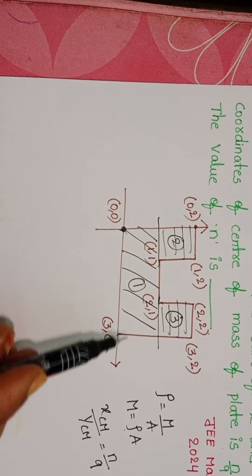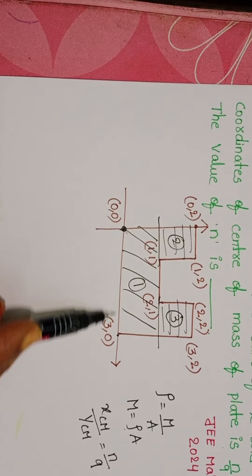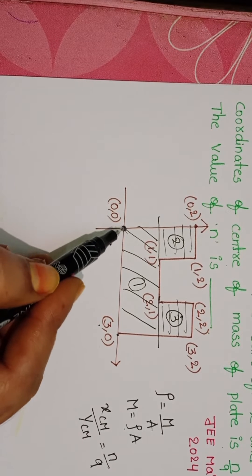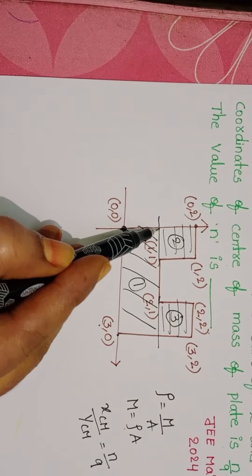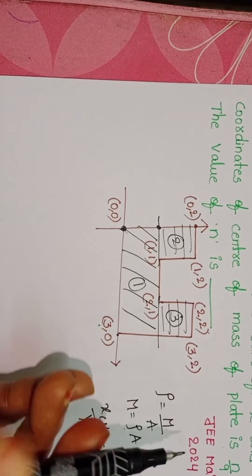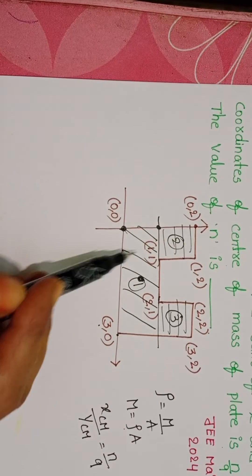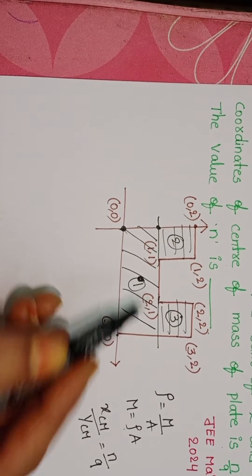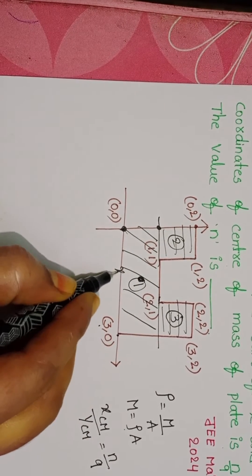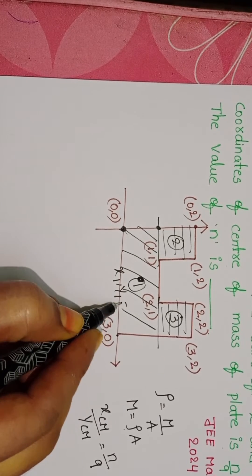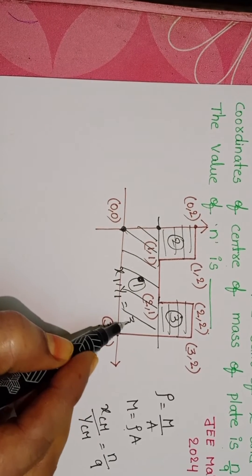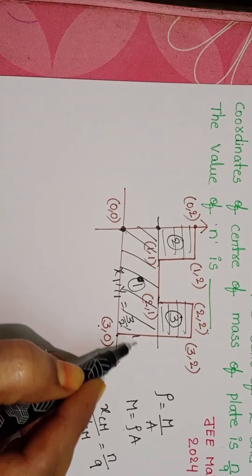From horizon to this point, x coordinate is 3, and from horizon to this point y coordinate is 1. Center of mass located exactly at the center of this figure. This is the position of the center of mass. x1 comma y1 equals 3 by 2 comma 1 by 2.